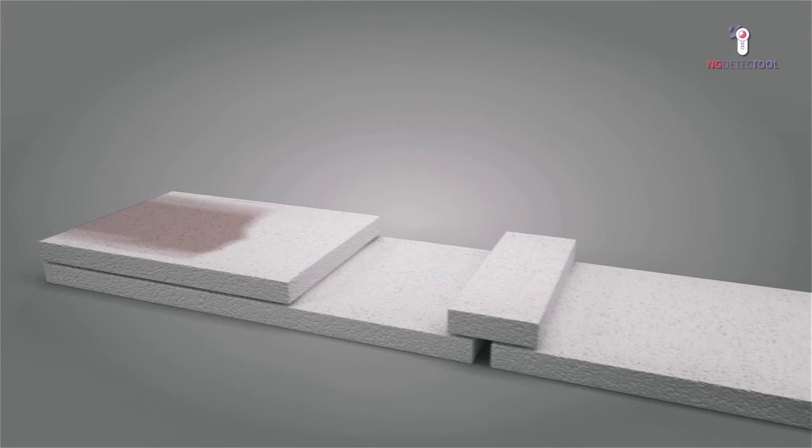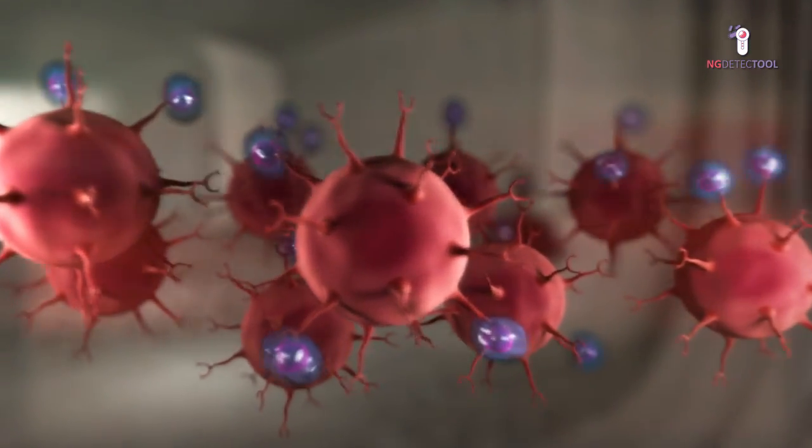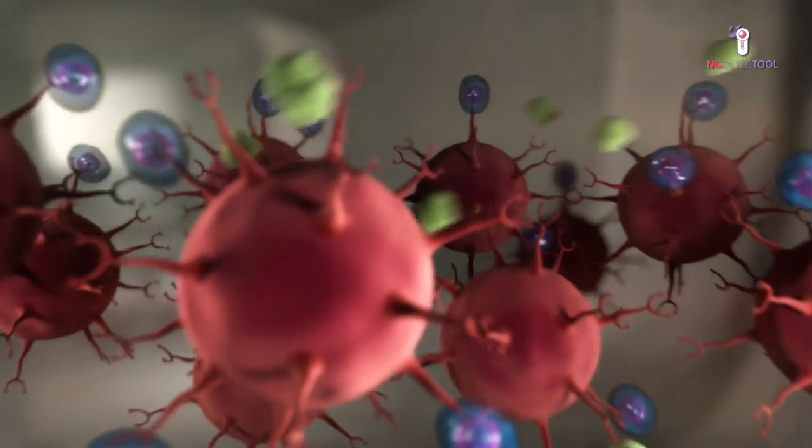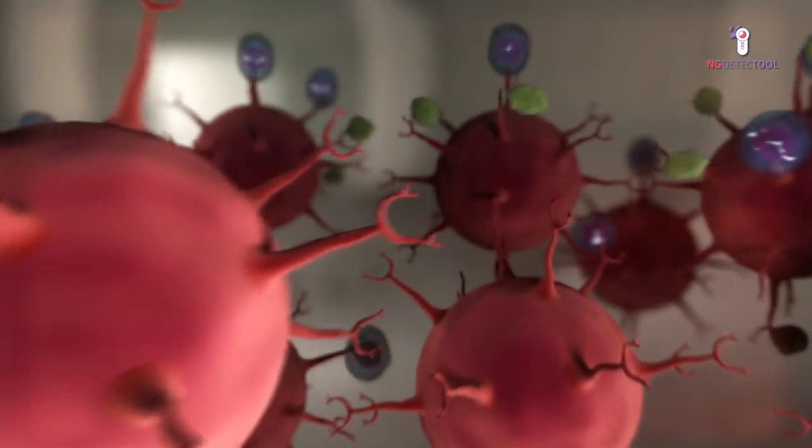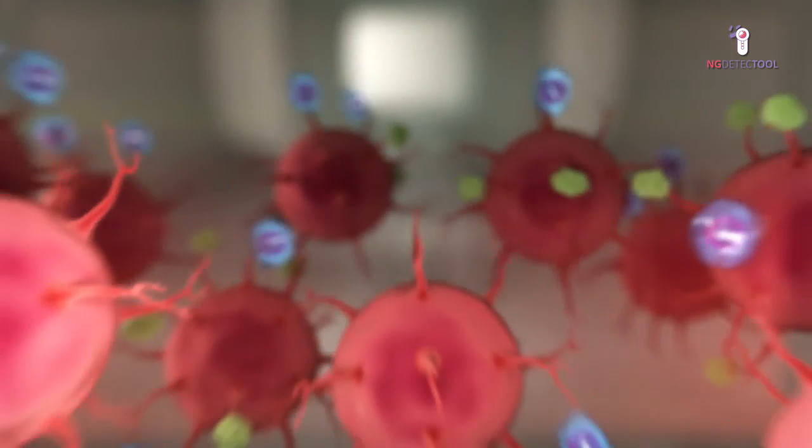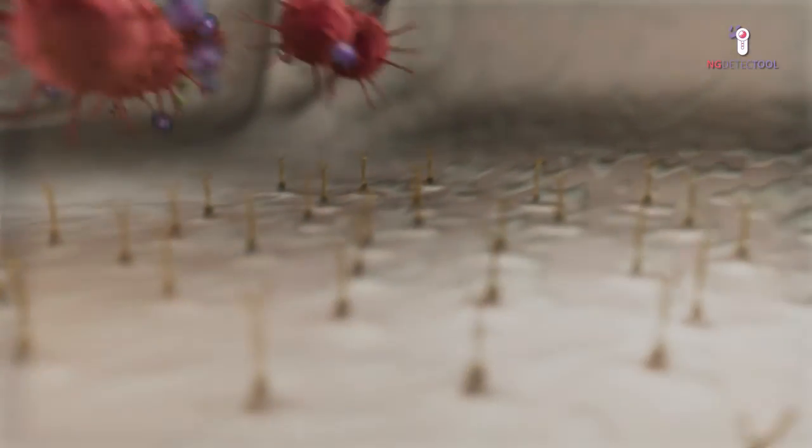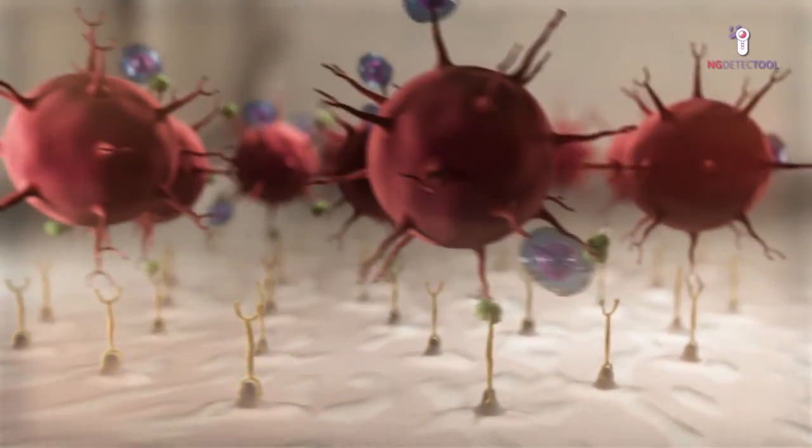When the sample is in contact with the strip, it flows along, passing first through the pad where the conjugated antibodies are located. If the antigen is present, the conjugated antibodies will bind to it and continue to migrate along the strip. These antibodies will recognize the test line and a colored band will appear.